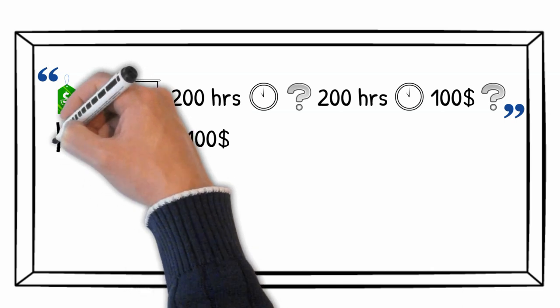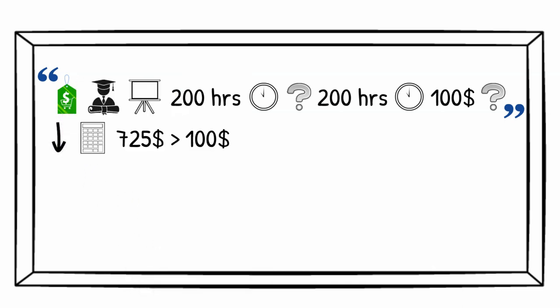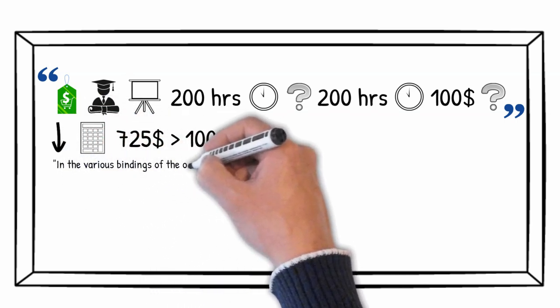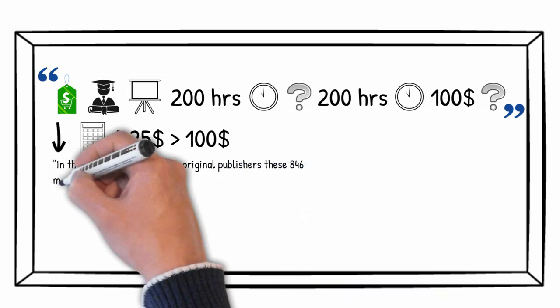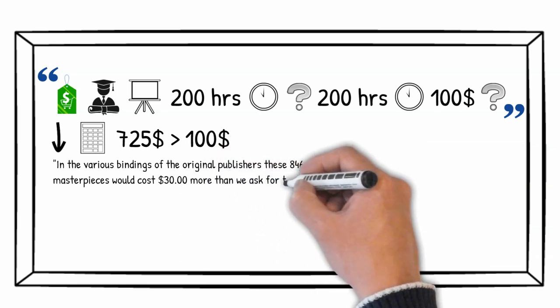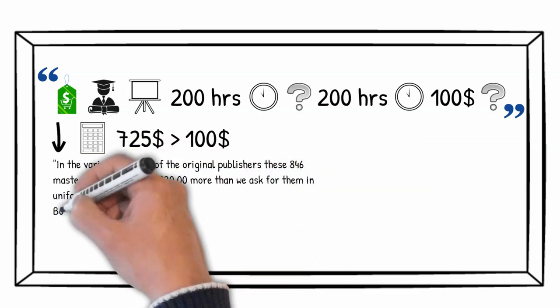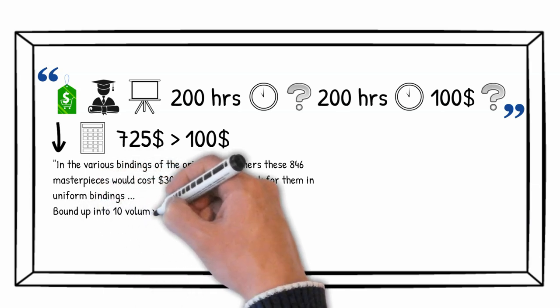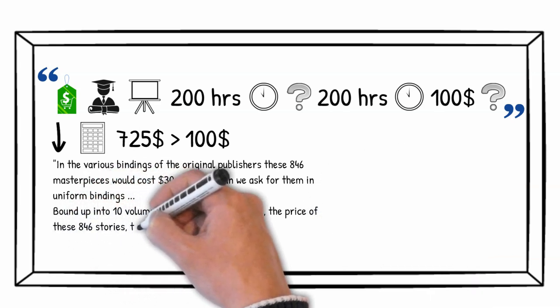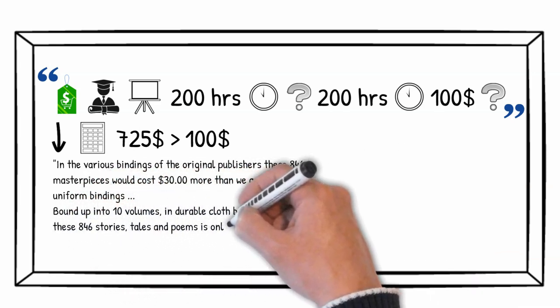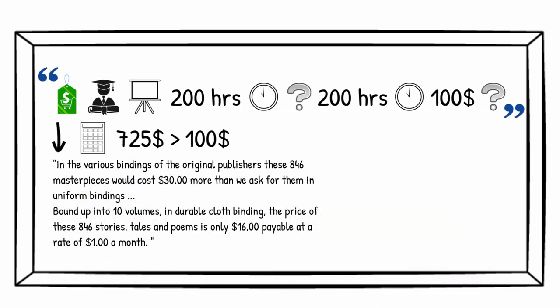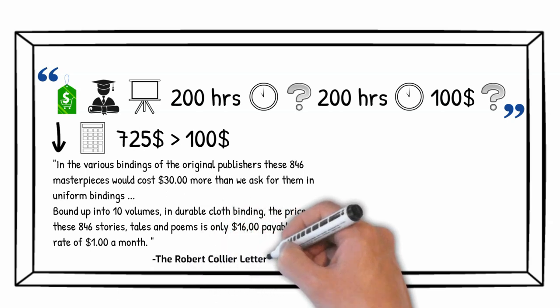Here is just one example out of many where Robert uses this principle. In the various bindings of the original publishers, these 846 masterpieces would cost 30 dollars more than we asked for them in uniform bindings. Bound up into 10 volumes and durable cloth binding, the price of these 846 stories, tales and poems is only 16 dollars, payable at a rate of 1 dollar a month. The Robert Collier letterbook, page 81.